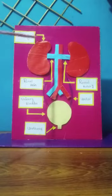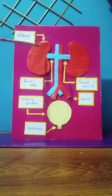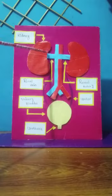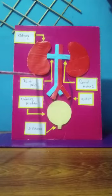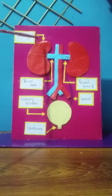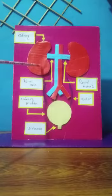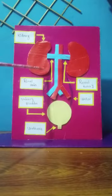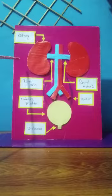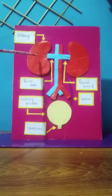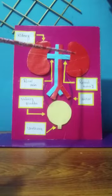Kidneys are bean shaped and slightly flattened. The inner surface is concave and the outer surface is convex. Each kidney is about 12 cm long, 6 cm wide and 3 cm thick. Kidneys are dark brown in color.